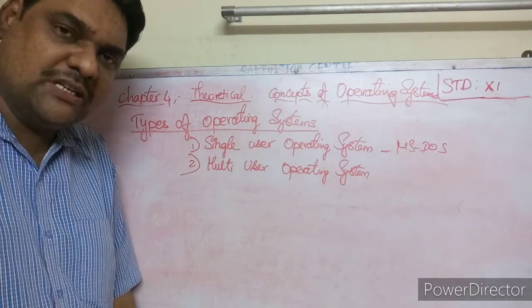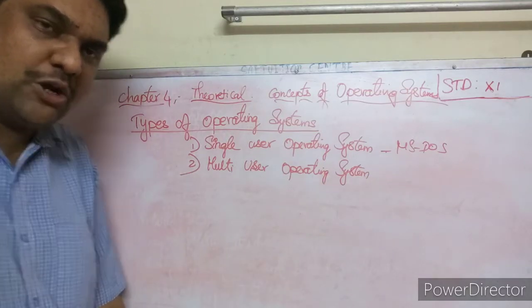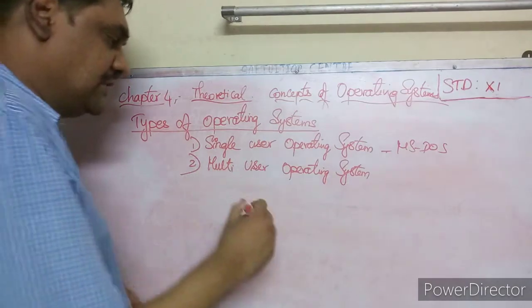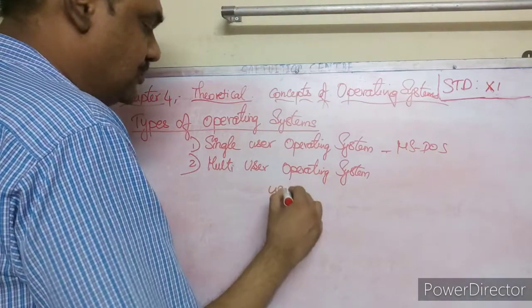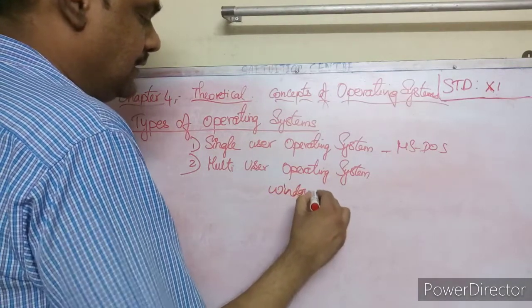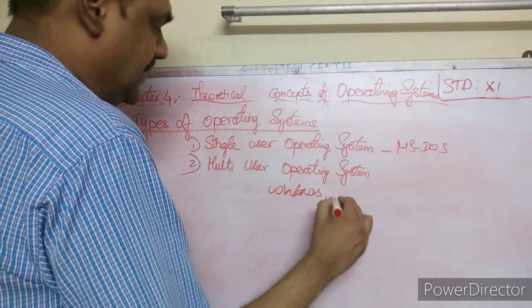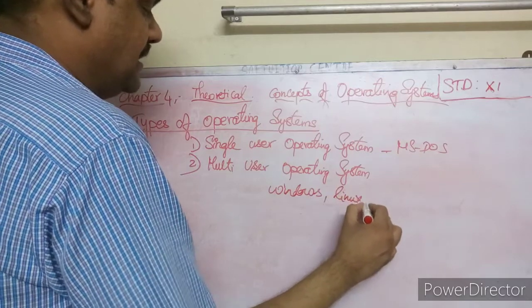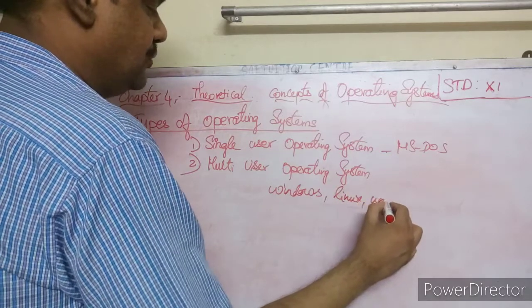A multi-user operating system allows more than one user to use it at the same time. That is called a multi-user operating system. Examples: Windows, Linux, Unix are multi-user operating systems.